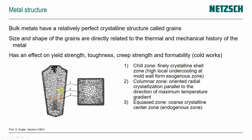Here I'm giving just a small intro to the structure of a metal. Bulk metals have a relatively perfect crystalline structure, and that structure is called grains. It's like little distinct regions within a component. The size and shape of the grains are directly related to the thermal mechanical history of the metal and have an effect on yield strength, toughness, creep strength, and formability. Here depicted, you have numbers one, two, and three going over the cross-section.